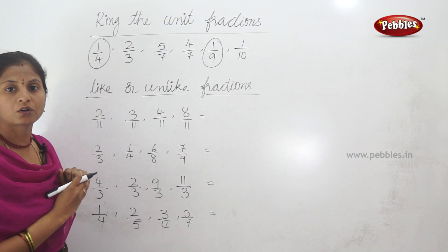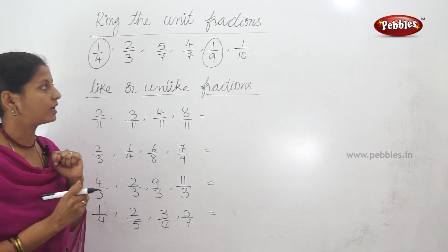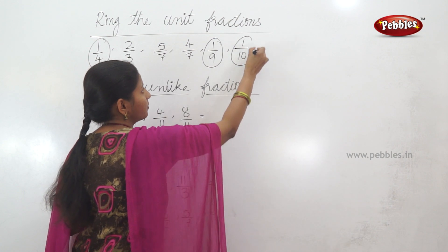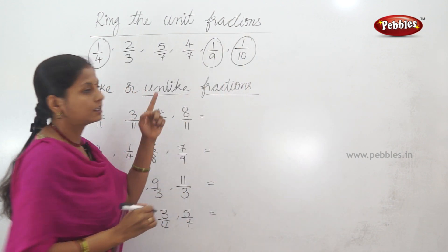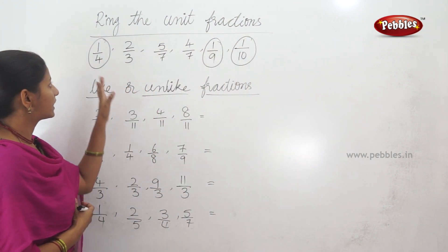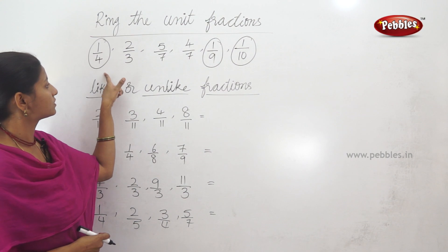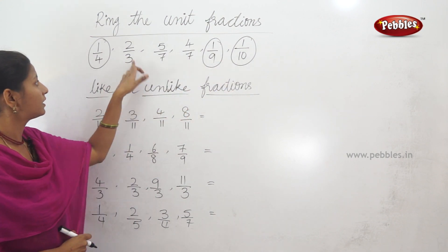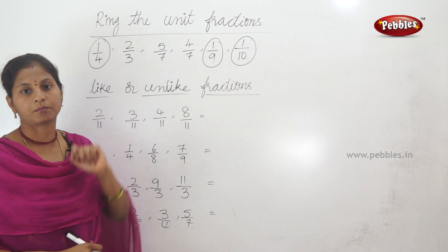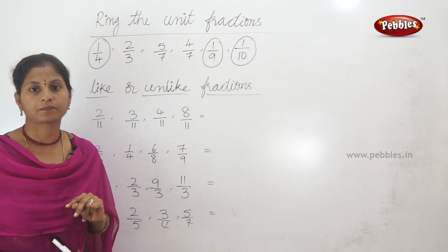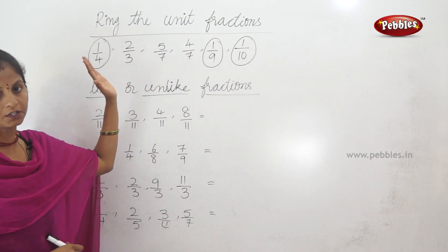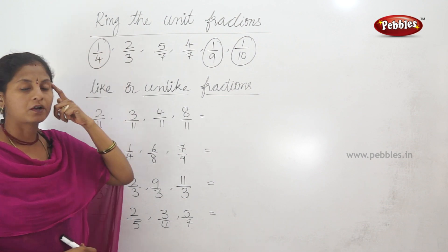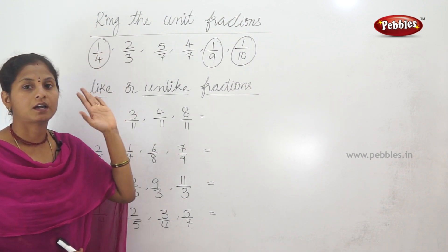In unit fractions, the numerator is always 1. The last fraction's numerator is 1 — this is a unit fraction. So the first one and the last two are unit fractions — because the numerator is 1.